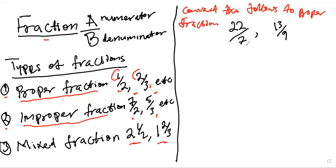So we have 22 over seven and we have 13 over nine. This is just like a rounded way of division — you can have a decimal or whatever. So we have the dividend, which is the one on top, and we have the divisor. The dividend is also known as the numerator and the divisor is also known as the denominator.